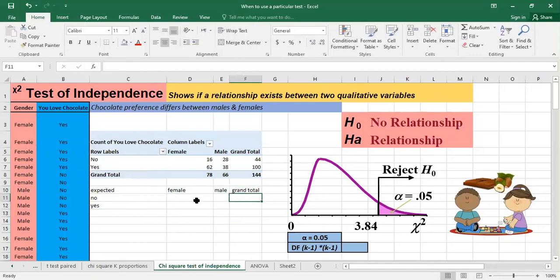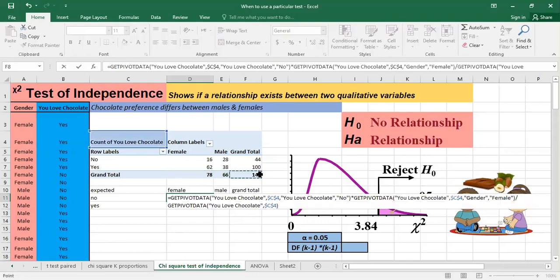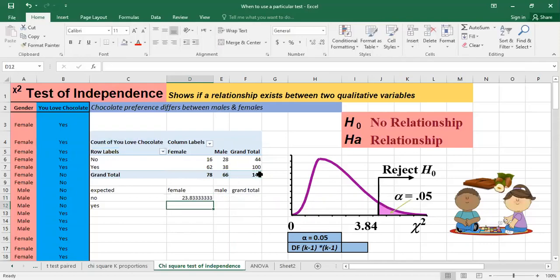So in order to calculate the expected, it's what we call the joint probability. It means it's equal to the rows total times the columns total divided by the grand total. It means here the expected count for this cell for the females that don't love chocolate, it's 23.83.